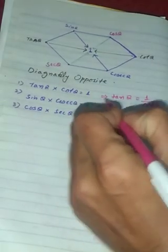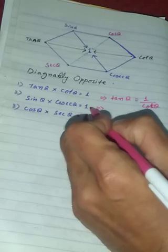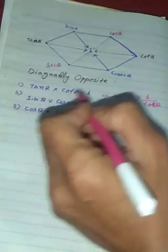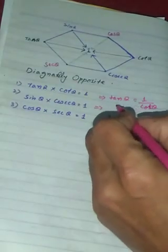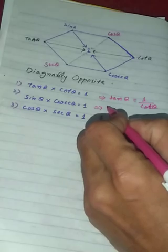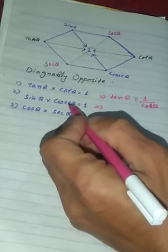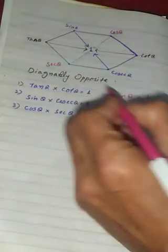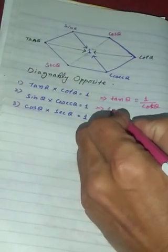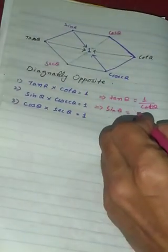The other side gives: sine theta multiplied by cosecant theta is equal to 1. If you divide both sides by sine theta, or by cosecant theta, you get 1 divided by the normal side — that is, sine theta equals 1 divided by cosecant theta.